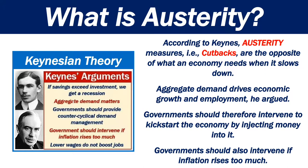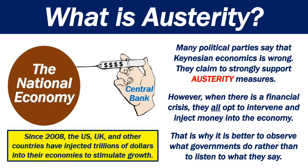Aggregate demand drives economic growth and employment, he argued. Government should therefore intervene to kick-start the economy by injecting money into it, and also intervene if inflation rises too much. Many political parties say that Keynesian economics is wrong and claim to strongly support austerity measures. However, when there is a financial crisis, they all opt to intervene and inject money into the economy. That is why it is better to observe what governments do, rather than to listen to what they say.